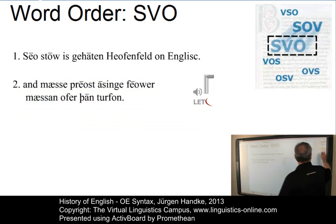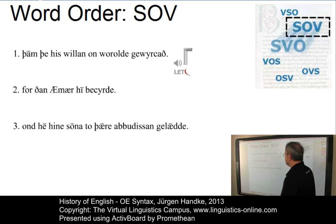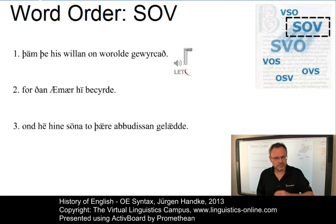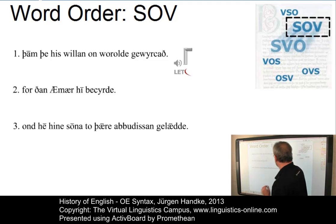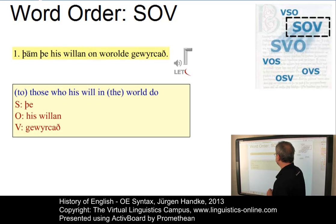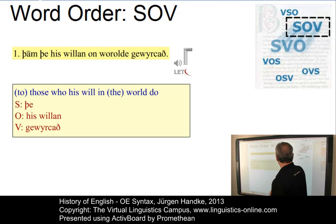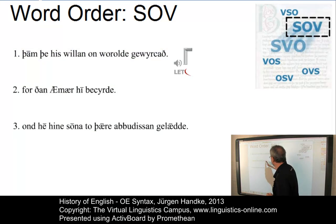Continuing with SOV: in subordinate clauses, the typical word order in Old English was SOV. In the first example, 'The' is the subject, 'His Willan' is the object, and 'Yevirkath' is the verb at the end. In the second example, 'Elmer' is the subject, 'He' is the object, and 'Bekurd' is the verb — SOV.